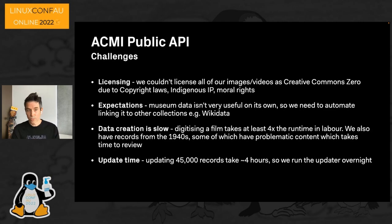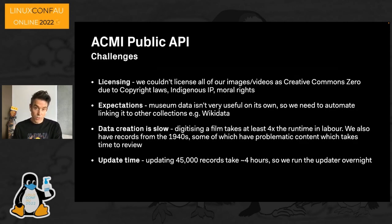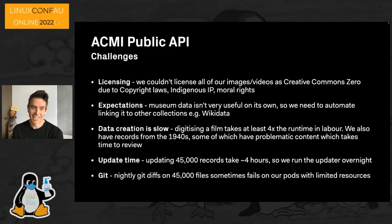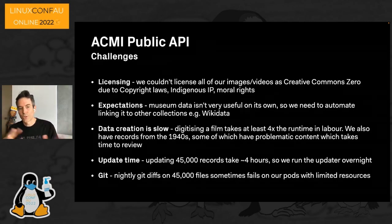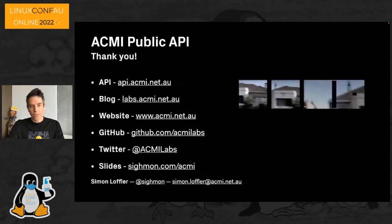Another challenge is the sheer update time — updating 45,000 records and processing changes takes about four hours, so we run the updater overnight. If we need any live fixes, there's about a four-hour turnaround. Also, the nightly git diffs on 45,000 files sometimes fail on the pods because they have a limited amount of memory, so we have a bit of a struggle keeping resources low while making sure the diffs don't kill the pods.